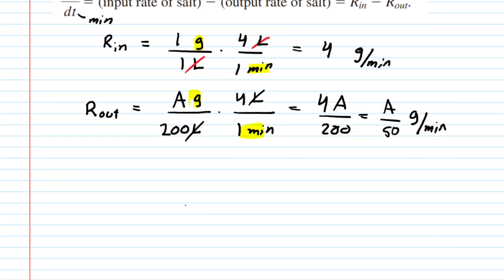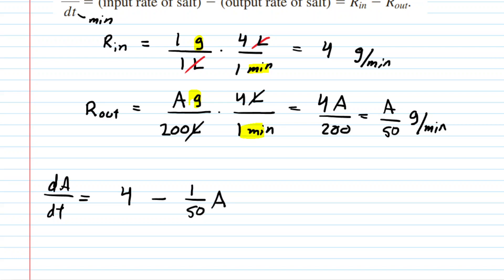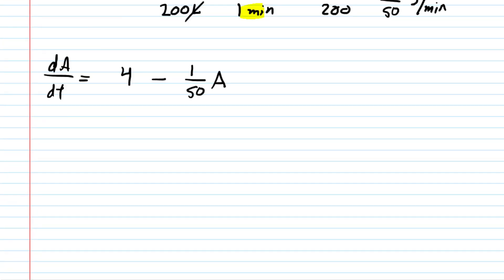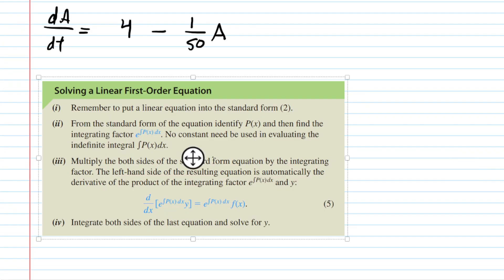Let's write down the differential equation: dA/dt equals the input rate of salt, which was four, minus the output rate of salt, which is A over 50 — written as one-fiftieth A, which will be advantageous. This is a very special type of differential equation known as a linear first-order equation.